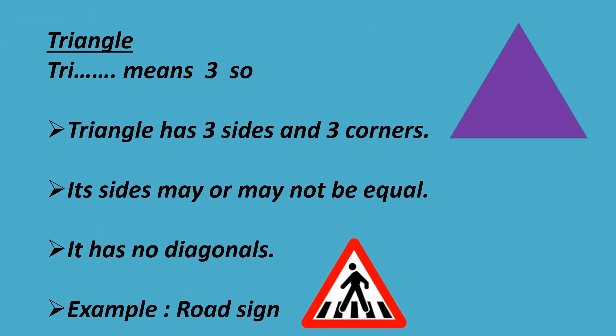Tri means three. So, triangle has three sides and three corners. Its sides may or may not be equal. It has no diagonals. Example: road sign.